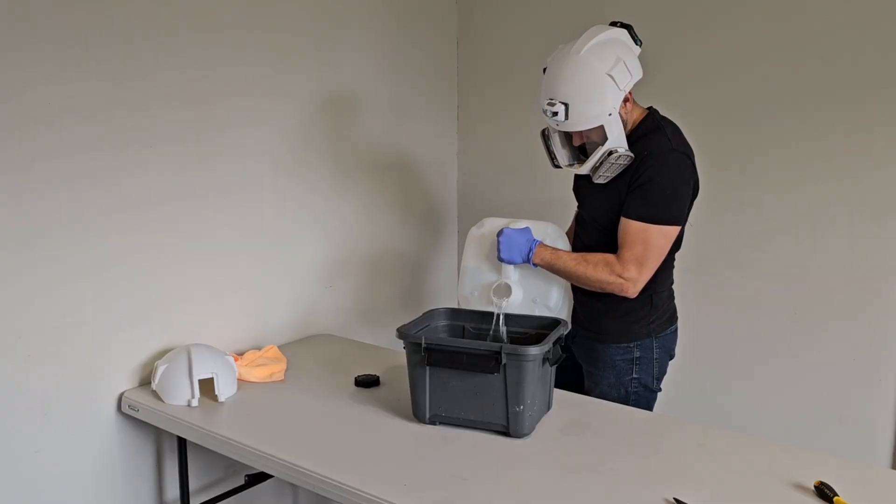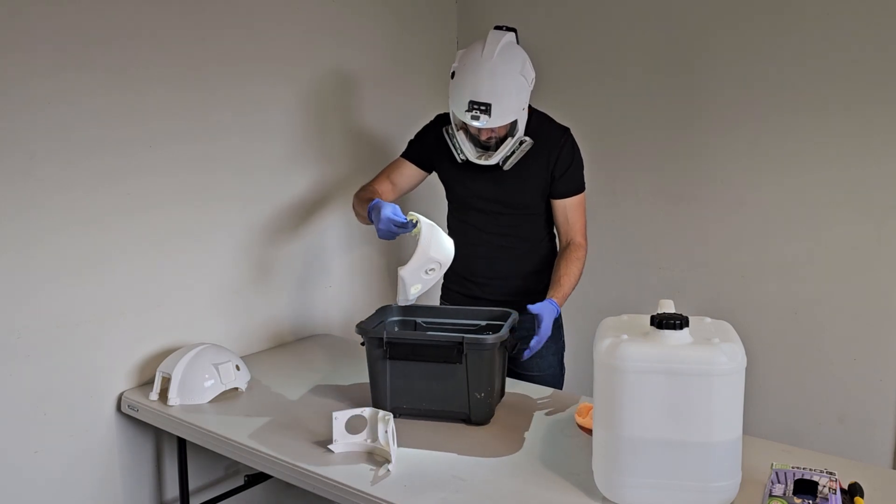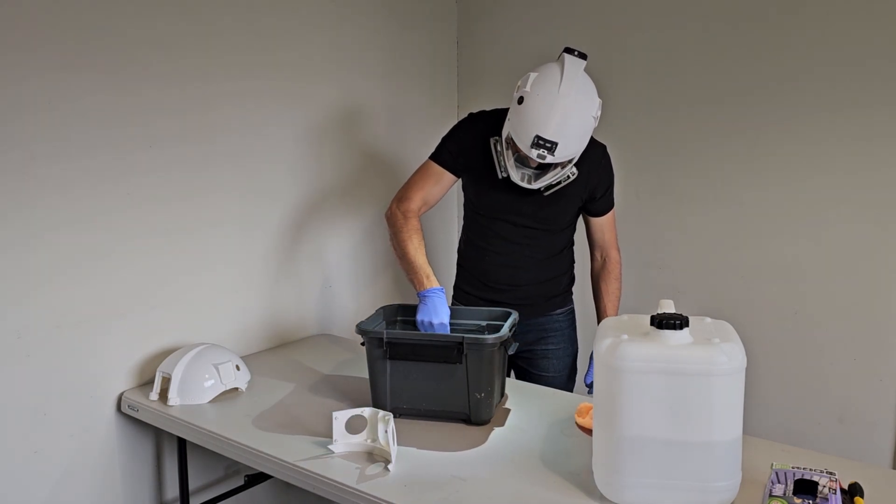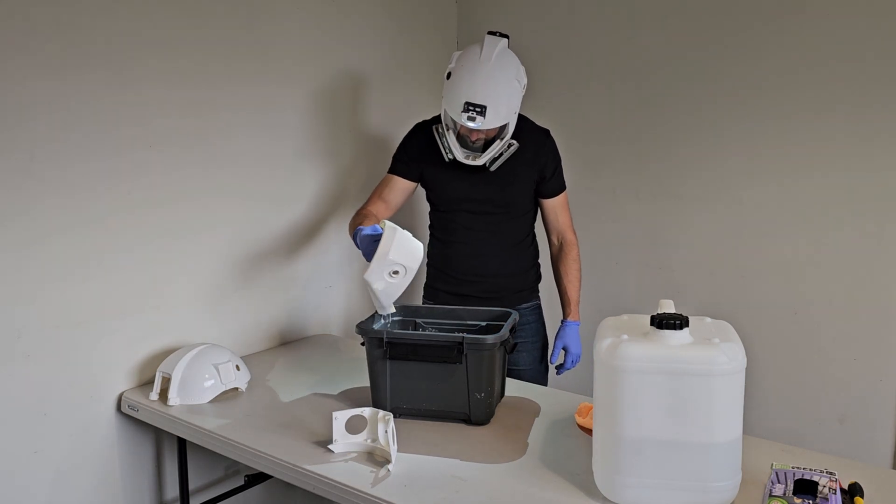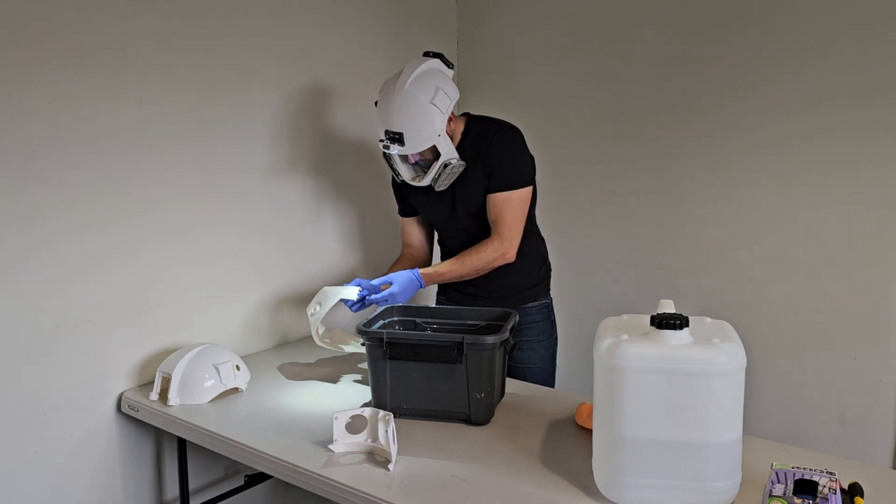Another method is you fill a container with acetone and then dip your part in for about 3-5 seconds. This produces a really good surface finish but you can't do it with hollow parts. The acetone seeps into any cavities of the part and actually dissolves the plastic from within.